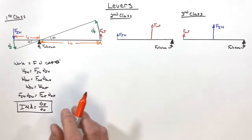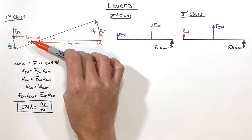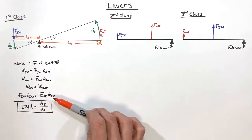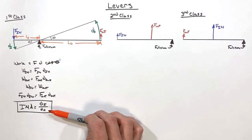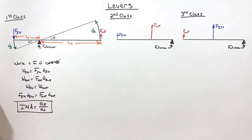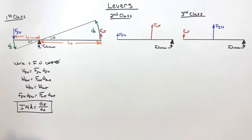And so we can actually create a relationship between our displacements here and the length of this lever to try to get us to this formula for IMA, so that we can relate this to the geometry of the lever itself, not how far it moves. So watch what happens here.